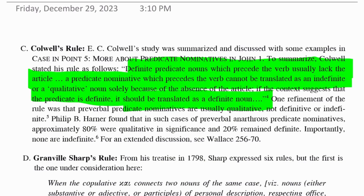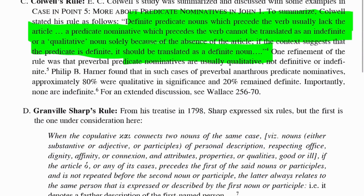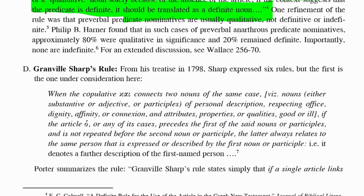This is the rule and the situation. What do we do with cases where the predicate nominative precedes the verb of being without the article? Should we translate that as 'a' or 'the' — is that predicate nominative definite or not? Now Philip Harner studied these cases and found that in such cases of pre-verbal anarthrous predicate nominatives, 80% of them were qualitative — in other words, stressing the essence or quality of what that noun signified. So in no way meaning indefinite, something unknown, but rather stressing what that entity really is.